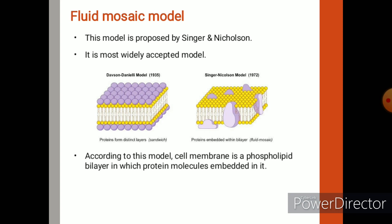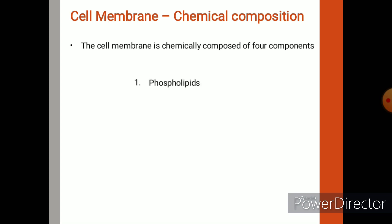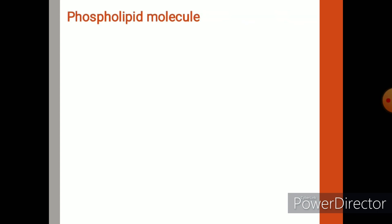This kind of arrangement gives a mosaic appearance to the cell membrane. That is why these scientists named this model the fluid mosaic model. According to this model, the cell membrane is composed of different components like phospholipids, proteins, carbohydrates, and cholesterol.